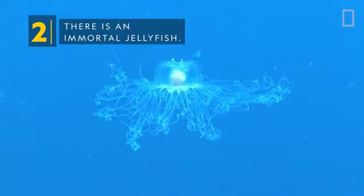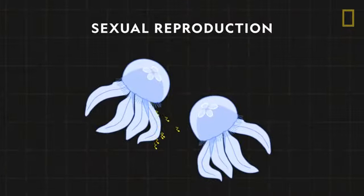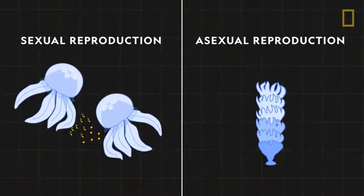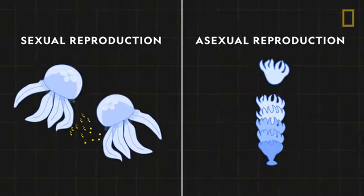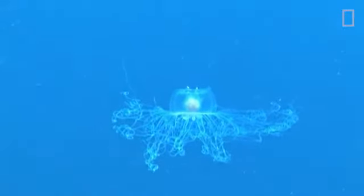There is an immortal jellyfish. Jellyfish can reproduce sexually by releasing sperm and eggs into the water and reproduce asexually by splitting into two or cloning. But at least one jellyfish can actually reverse the aging process.